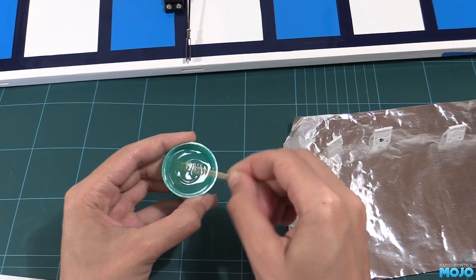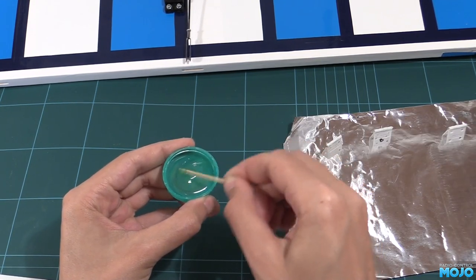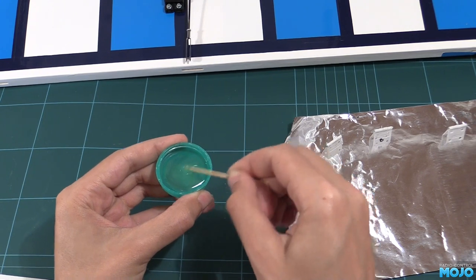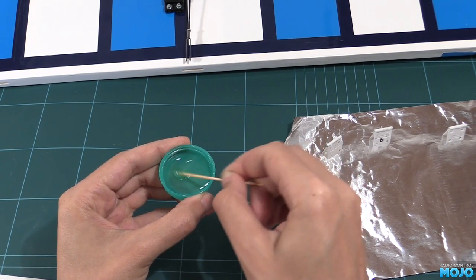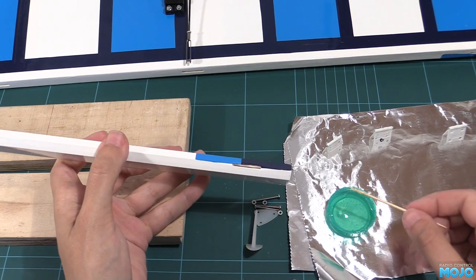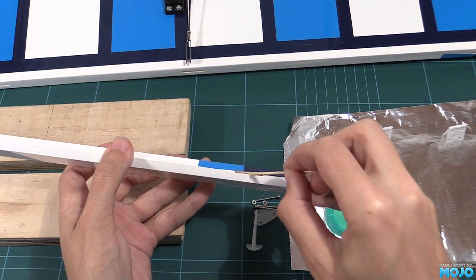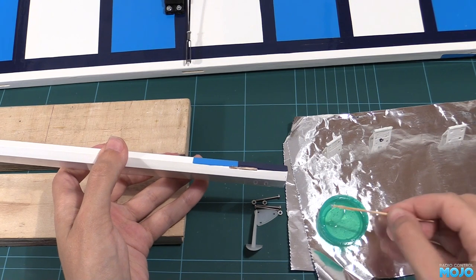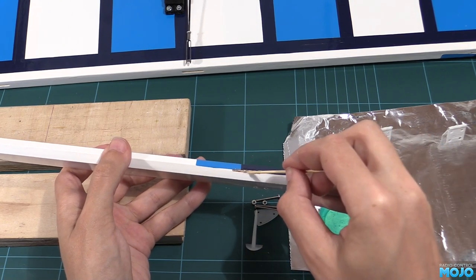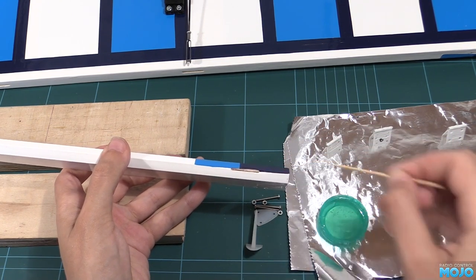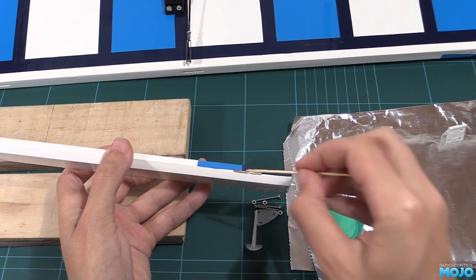Mix up some epoxy. 30 minute will do. One hour is better. You really don't want to have to rush to get the hinges in before it sets. The objective here is to get a good amount of epoxy into the slots. Use the pointy end of a cocktail stick to work it in. We want just enough so when the hinge goes in it won't quite overflow. One of those things that you learn to judge when you've done a few.